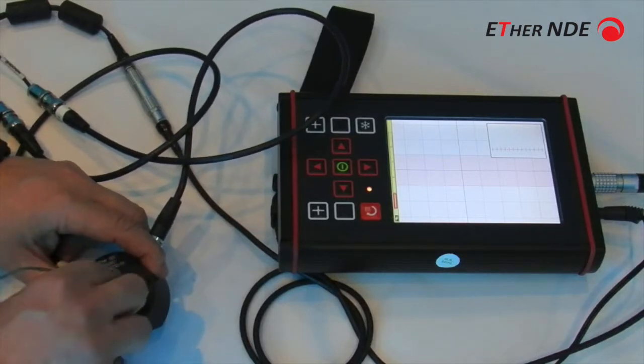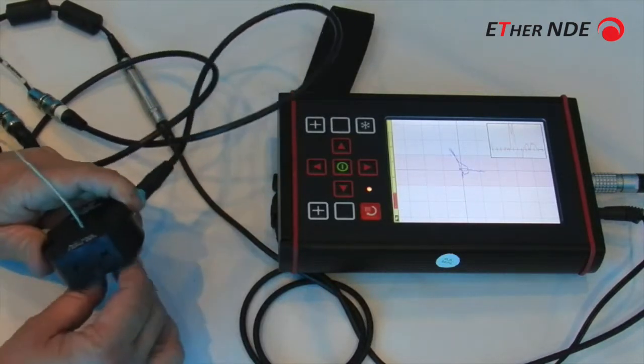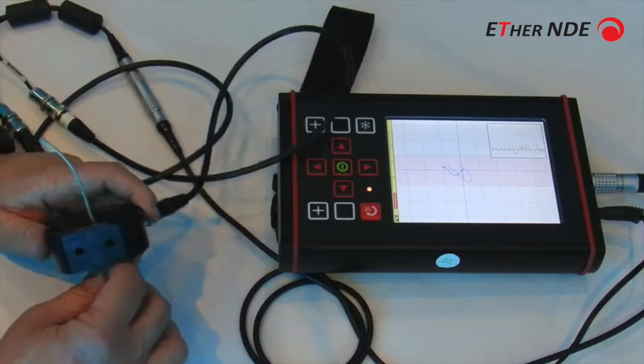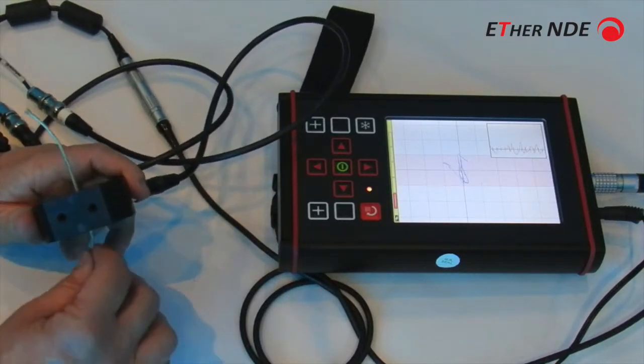Coils are available in various variety sizes, you can use absolute or differential. Differentials prefer to find defects, sorting is better with absolute.